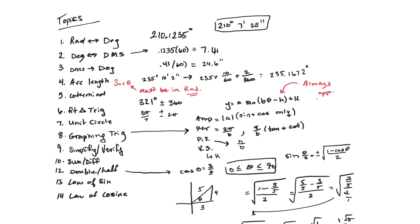Sum and difference formulas: for example, finding sine of 105 degrees, we rewrite it as sine of 60 plus 45. Plug that into the sum formula from your formula sheet and use the unit circle values to finish it out.